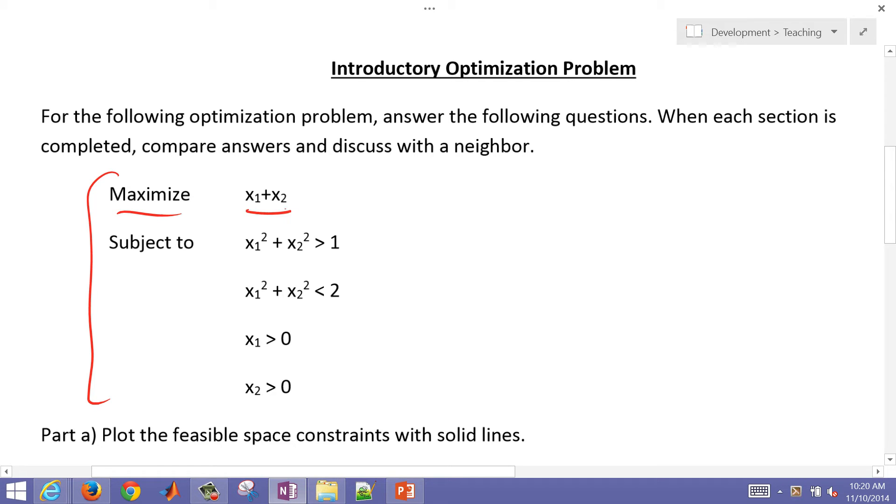We're going to maximize x1 plus x2, subject to four constraints. The first constraint is x1 squared plus x2 squared is greater than 1. The second is x1 squared plus x2 squared is less than 2. And x1 and x2 also have to be greater than 0, so we can adjust x1 or x2 up or down.